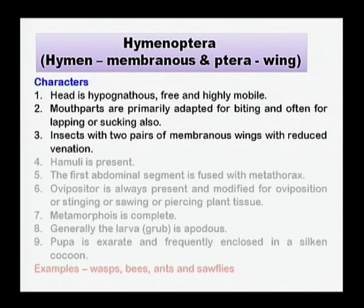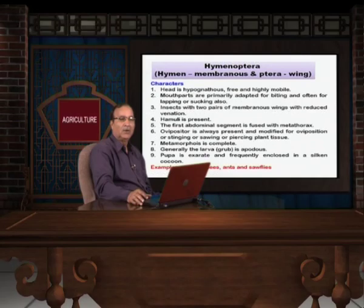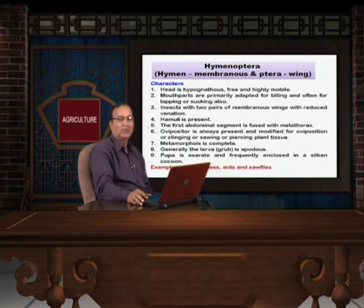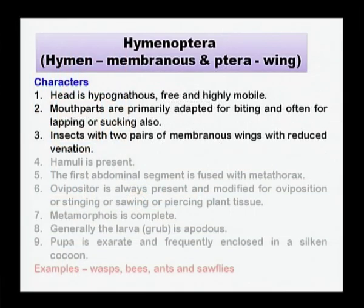With regards to the wings, two pairs of wings are present, but the wing venation is very much reduced — meaning the longitudinal and cross veins are few in number compared to other orders. Longitudinal veins run from the base of the wing towards the anterior margin, whereas cross veins connect any two longitudinal veins. So although two pairs of membranous wings are present, venation is very much reduced.